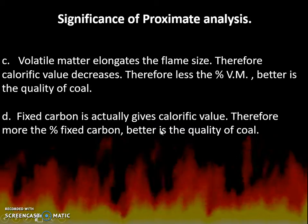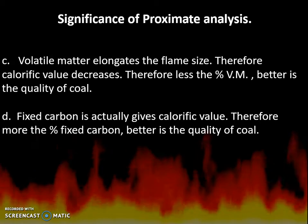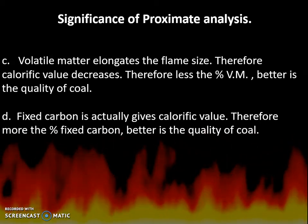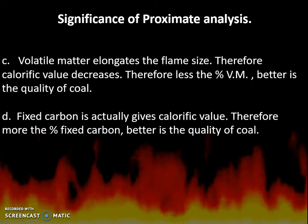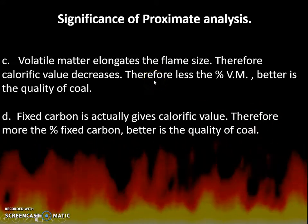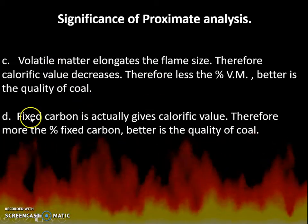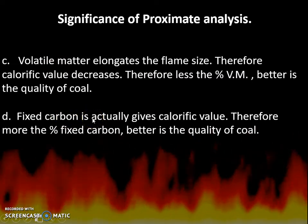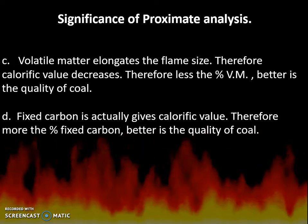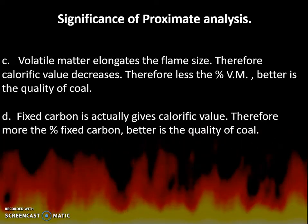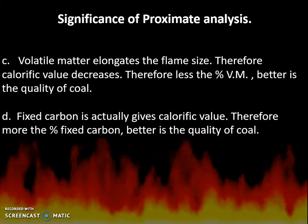Third, volatile matter consists of compounds or gases which elongate the flame size, thereby decreasing the calorific value of the fuel — therefore, less the volatile matter percentage, better is the quality of coal. Fourth, fixed carbon gives the calorific value — therefore, more the percentage of fixed carbon, better is the quality of coal.